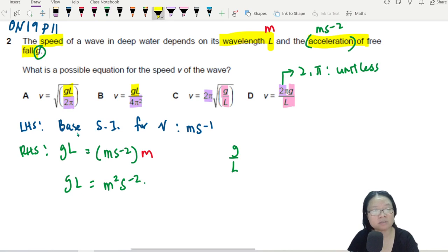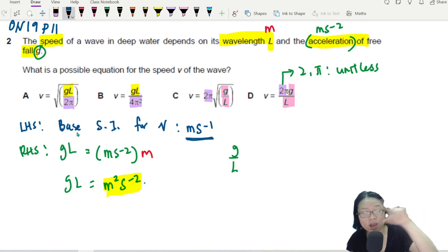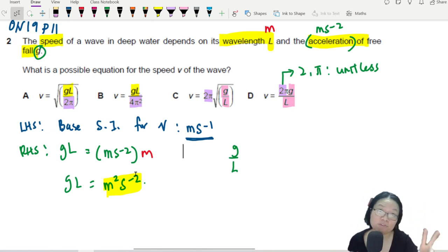So if I want M²S⁻² to be equal to the original MS⁻¹, I need to square root, right? This 2 must become 1. The negative 2 must be negative 1. What do we do? We square root.